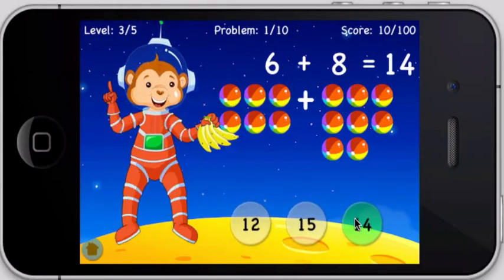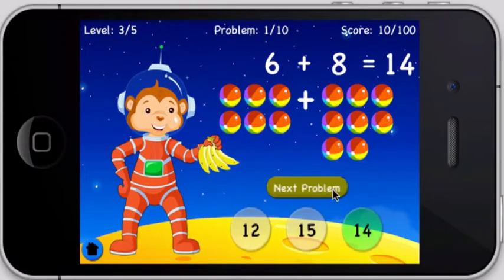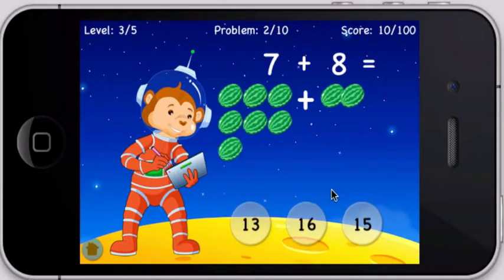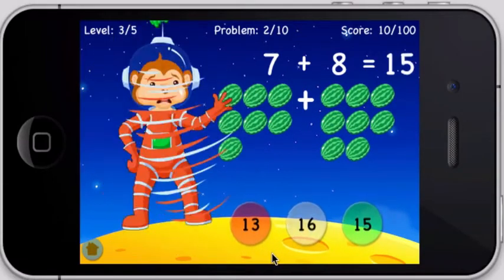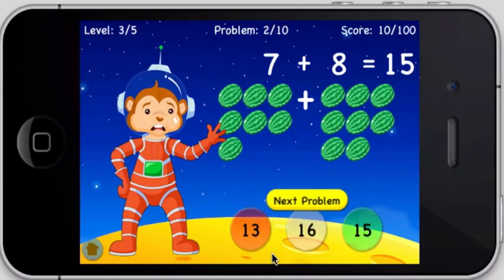What is 7 plus 8? Oops! Incorrect! 7 plus 8 equals 15.